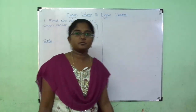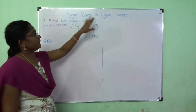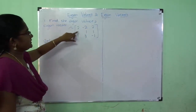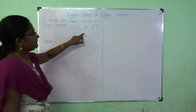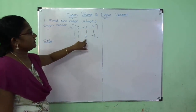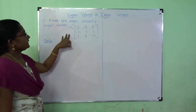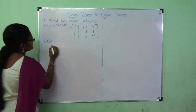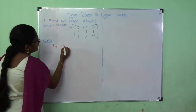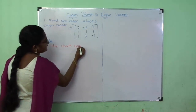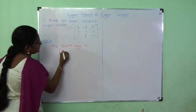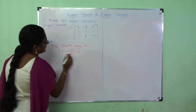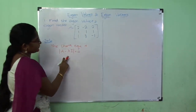Hi everyone. Now let us see about eigenvalues and eigenvectors. Consider this problem: find the eigenvalues and eigenvectors of the matrix A = [[2, -2, 2], [1, 1, 1], [3, 3, -1]]. The eigenvalues of this matrix can be found by the characteristic equation, which is given by the determinant of (A minus λI) equal to 0, where A is the given matrix, λ is the scalar quantity, and I is the identity matrix.